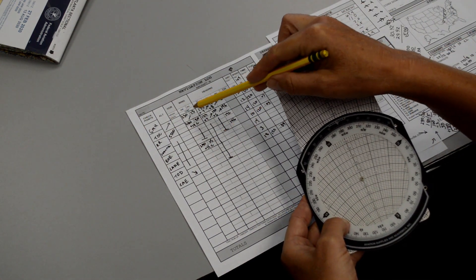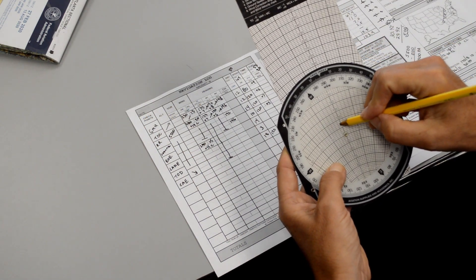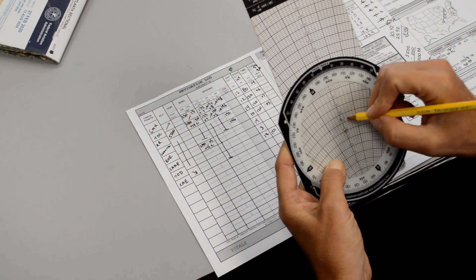Mark wind velocity up from center point. The wind velocity was 15. That was given to us by the weather briefer. So we go 10, 15, put a little pencil mark there.